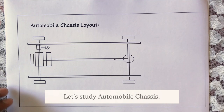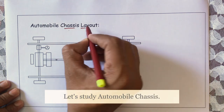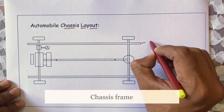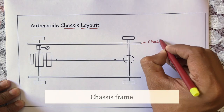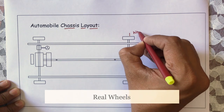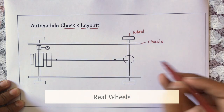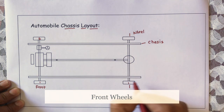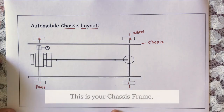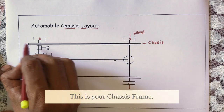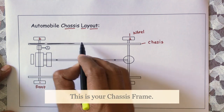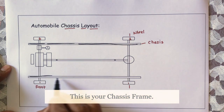Now let us study how the chassis layout will look and which parts are placed at which location. This is the chassis. These are the rear wheels — one and two. And these are the front wheels — one and two.